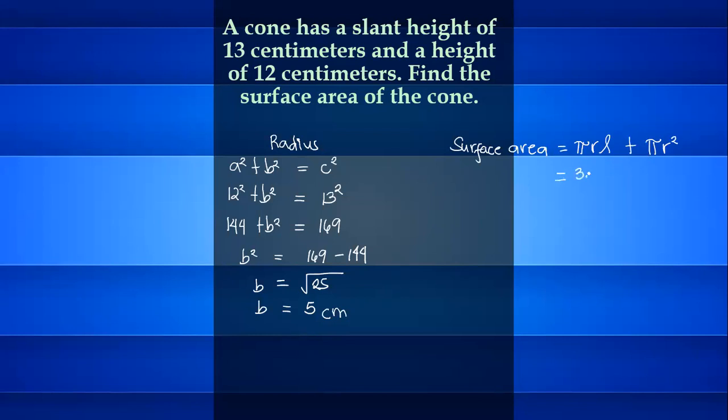Pi is 3.14 times the radius, 5, times the slant height, 13. 5 times 13 is equal to 65. 65 times 3.14 is equal to 204.1. Then, compute the base area.